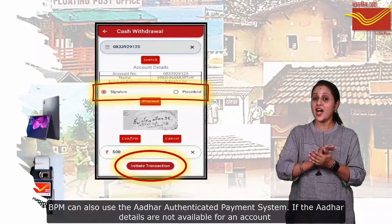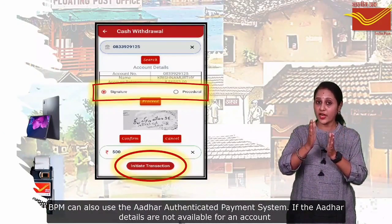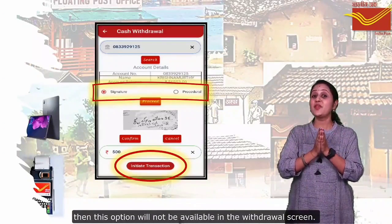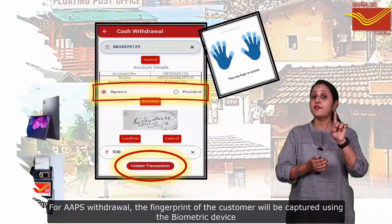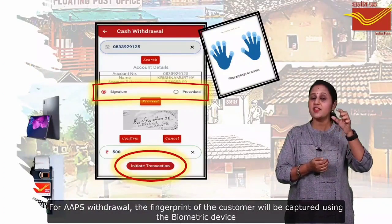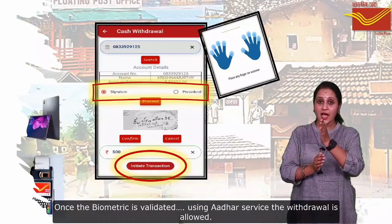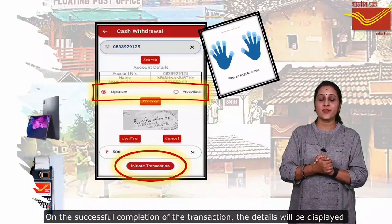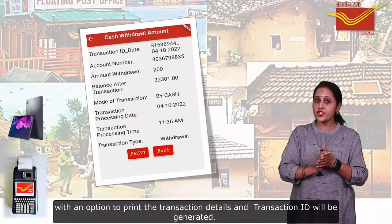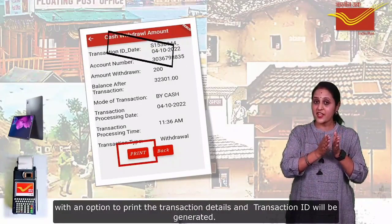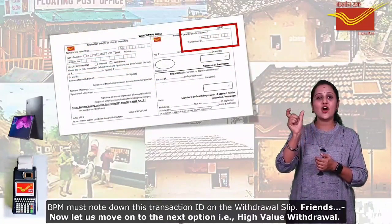BPM can also use the Aadhaar Authenticated Payment System. However, if the Aadhaar details are not available for an account, then this option will not be available in the withdrawal screen. For AAPS withdrawal, the fingerprint of the customer will be captured using the biometric device. Once the biometric is validated using the Aadhaar service, the withdrawal is allowed. On successful completion of the transaction, the details will be displayed with an option to print the transaction details and a transaction ID will be generated. BPM must note down this transaction ID on the withdrawal slip.